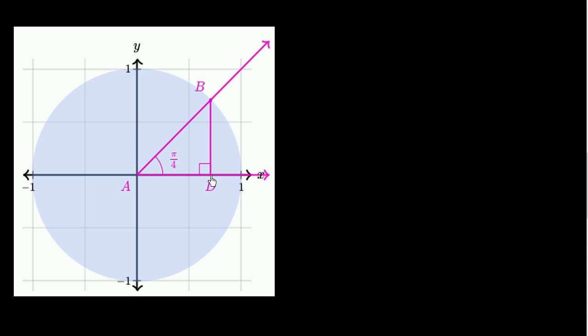What we have depicted here is a unit circle centered at point A. Point B lies on the circle, and we drop a perpendicular from point B to point D, where point D lies on the positive x-axis. They form triangle ABD, and angle BAD has a measure of pi over 4 radians.